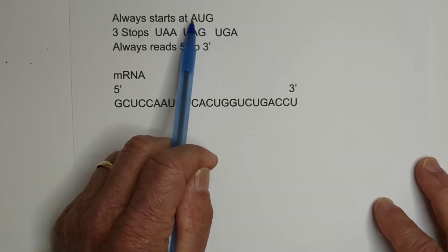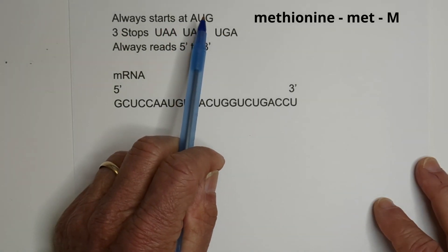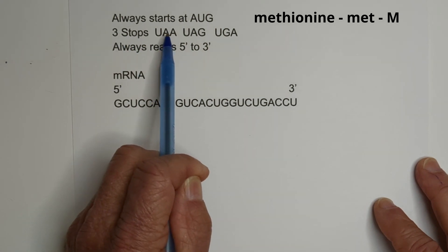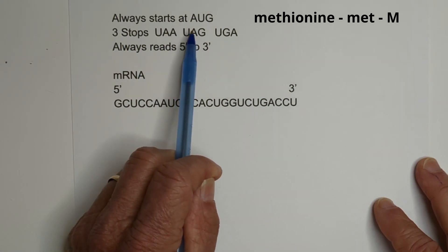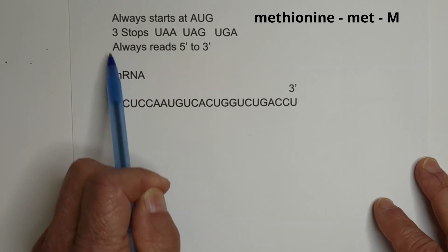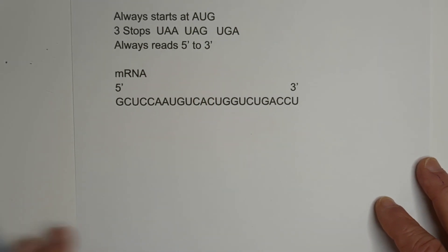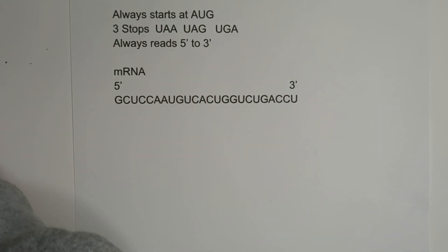let's go over a couple of guidelines. First, you always start at AUG, which is methionine. Next, you have three stops, which is UAA, UAG, or UGA, and you always read from 5 prime to 3 prime.